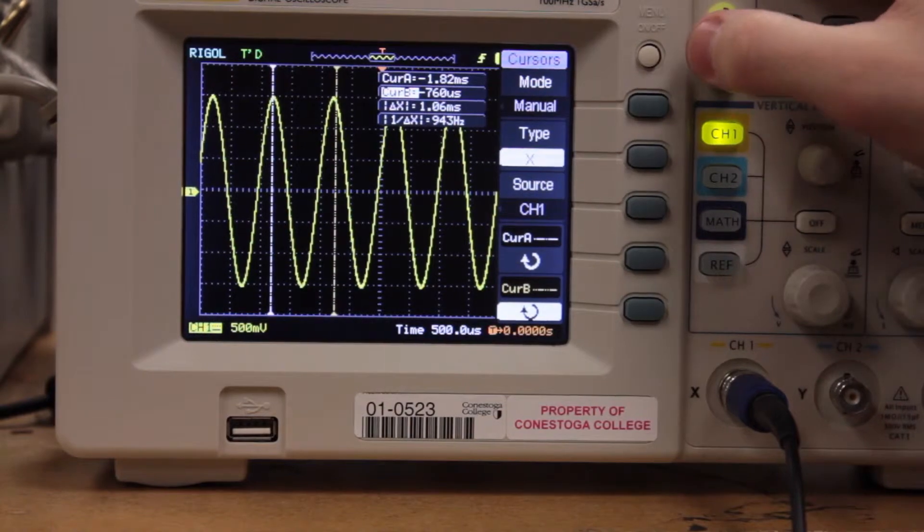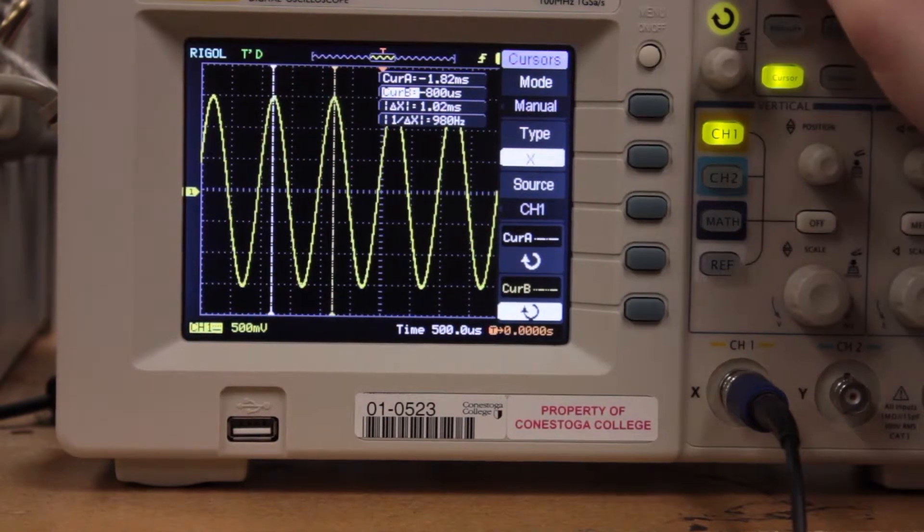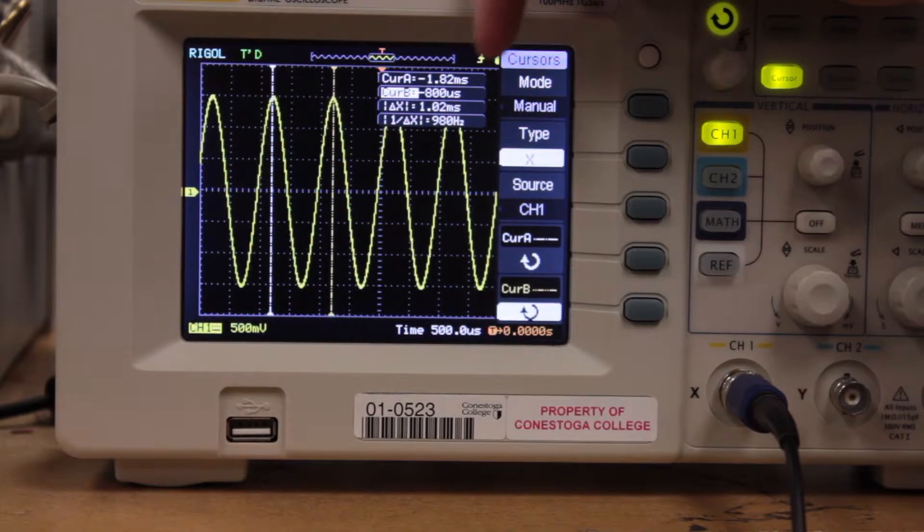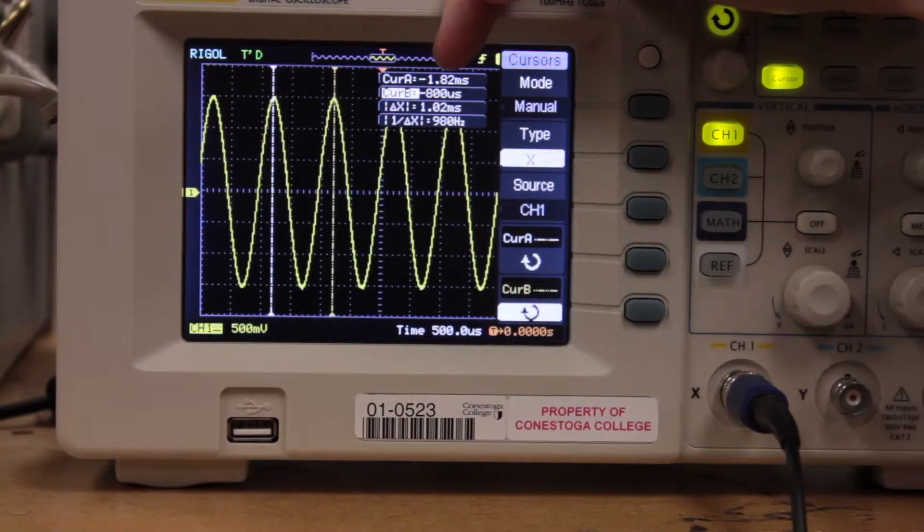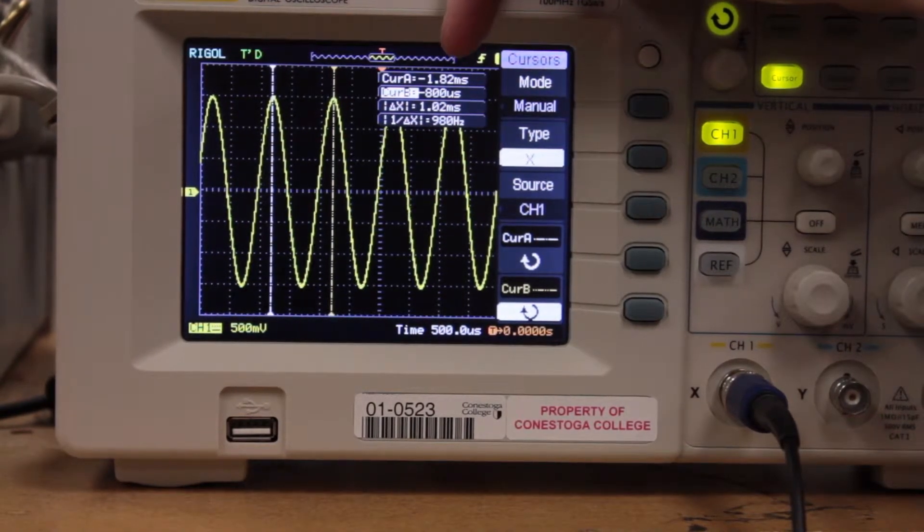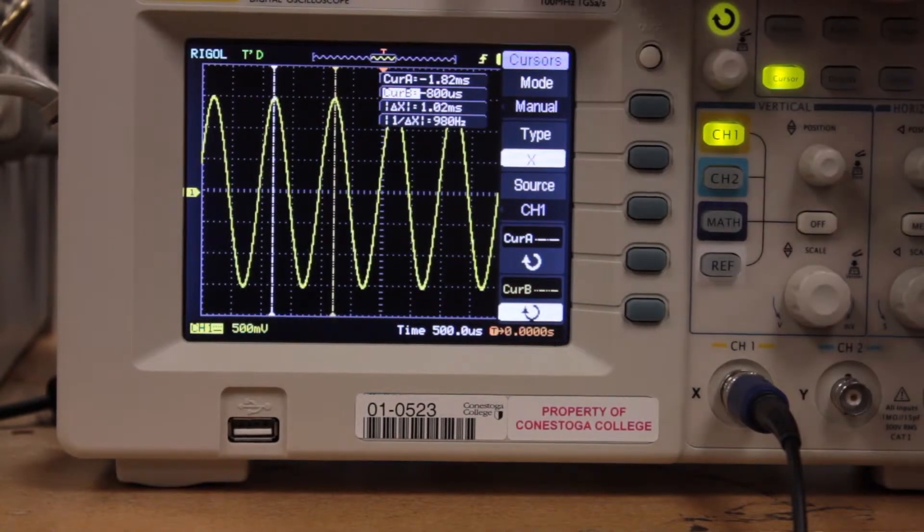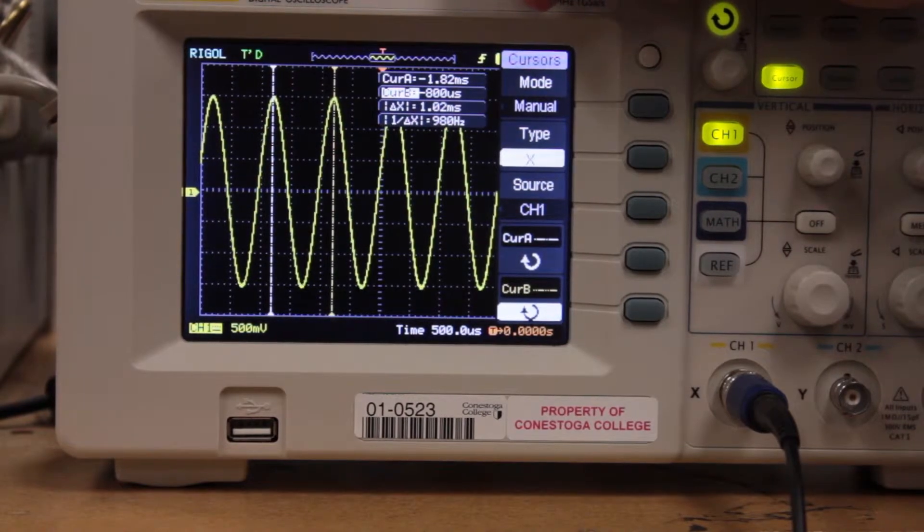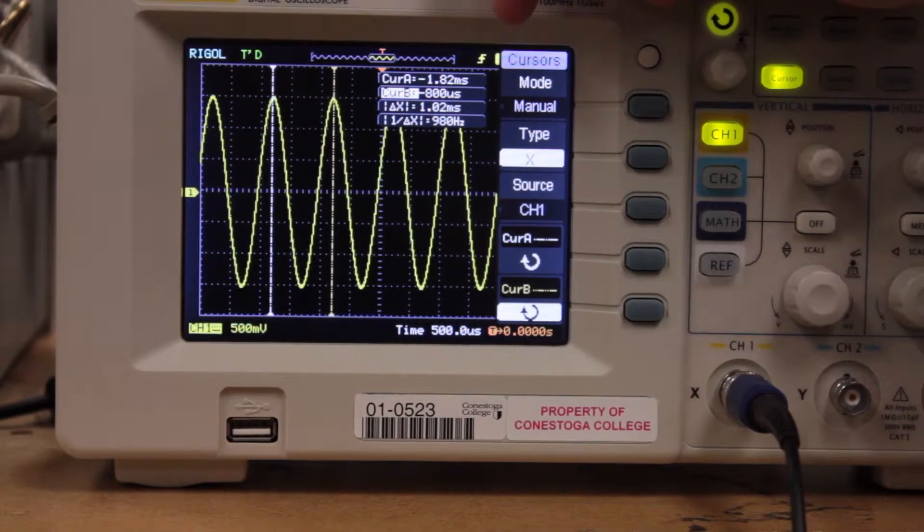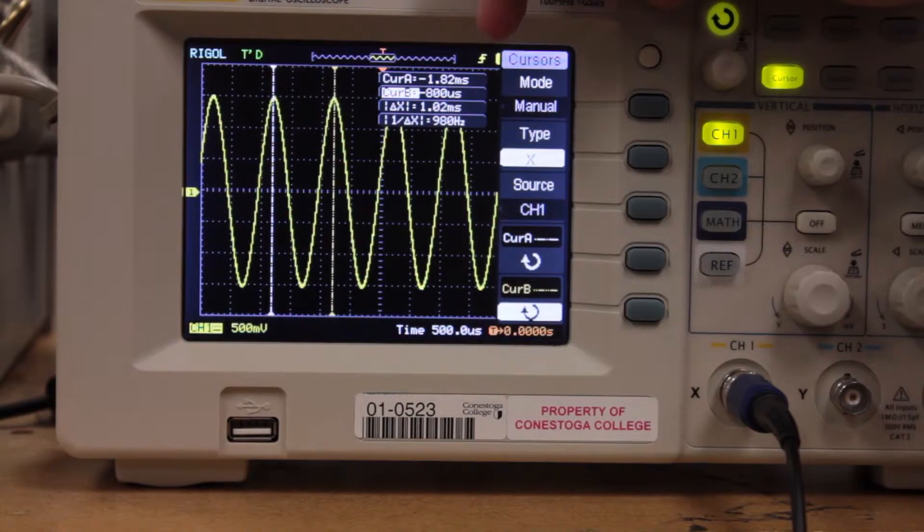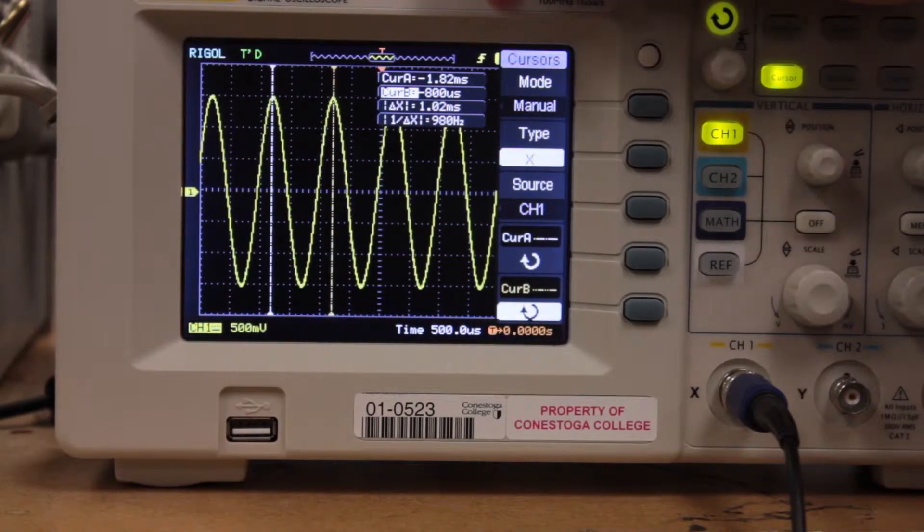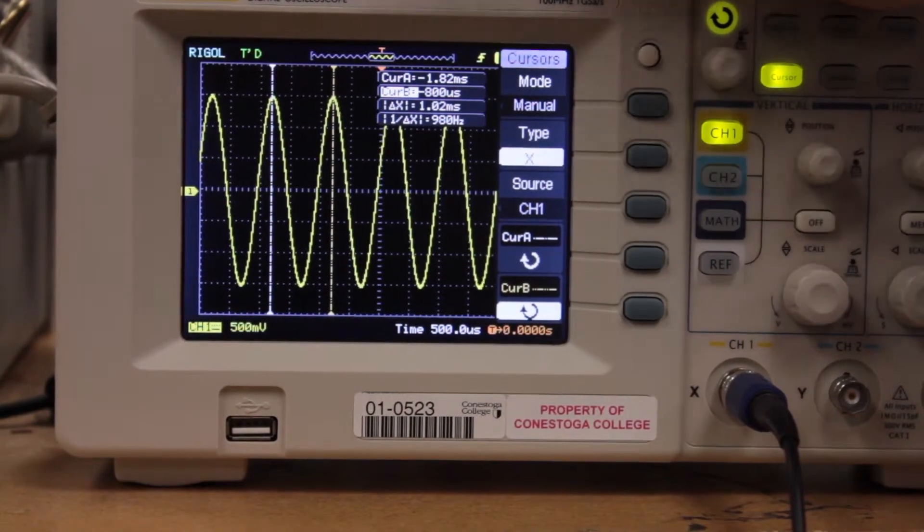So we'll just get that there. That's it. What I would do is I would take this and I would subtract the 800 microseconds from the 1.82 milliseconds, which would give me 1.02 milliseconds. Which the 0.02 is likely a rounding error because the scope isn't all that sensitive.